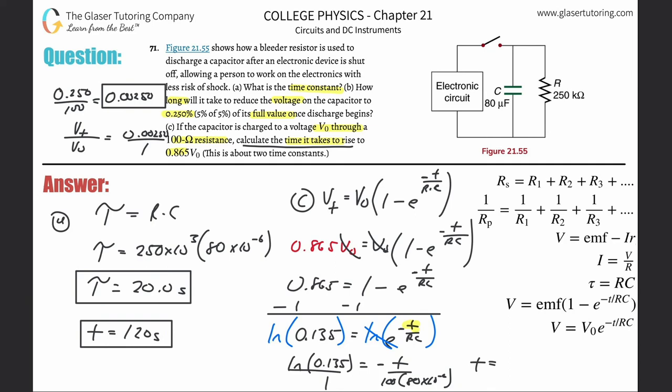LN of 0.135 times 100 times 80 times 10 to the minus sixth. Make it positive. This works out to be 0.016 seconds.